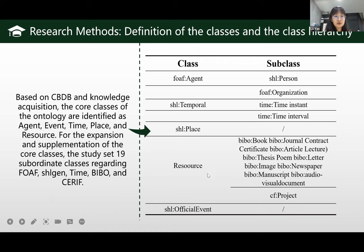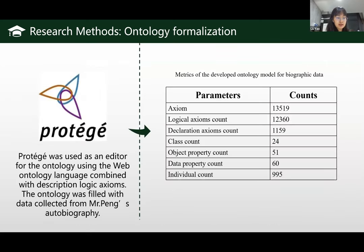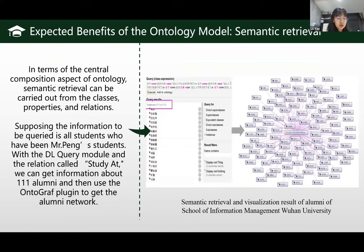The next step is to define classes and class hierarchy. Based on existing ontology and knowledge acquisition, the core classes are identified as: agent, temporal, place, resource, and official events. Then properties and relations of the classes were defined based on attributes of existing ontologies. The biographical ontology contains 22 classes, 60 properties, and 51 relationships. All the main classes and relationships are shown in the figure. Finally, ontology formalization was conducted — Protégé was used as an editor, and the ontology was filled with data collected from Mr. Peng's autobiography.